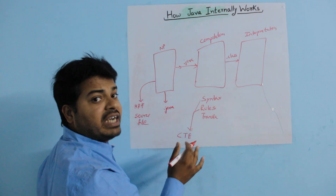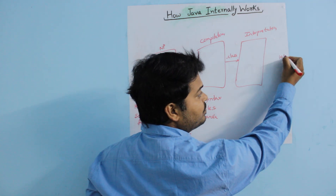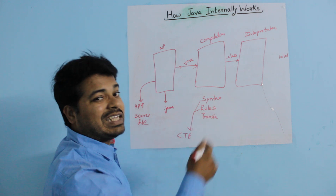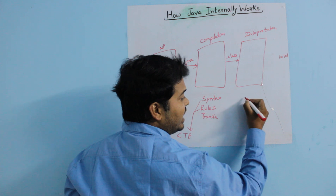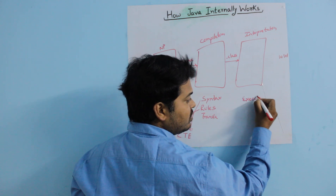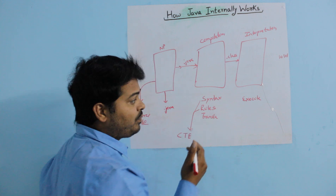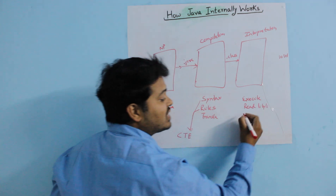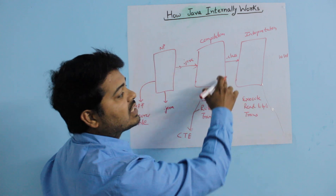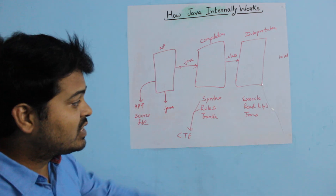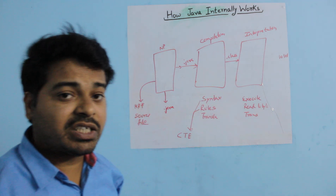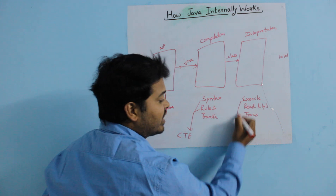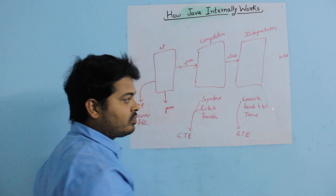The output for your interpretation stage is binary numbers. In interpretation, a few things take place: it will execute the program, read line by line, and translate your .class file into binary numbers. Any violation in the execution will lead to a runtime error.